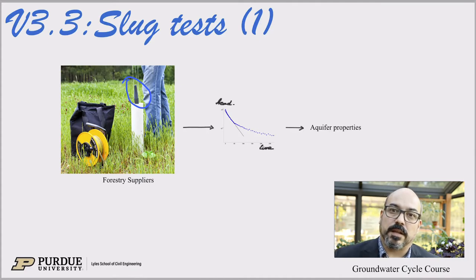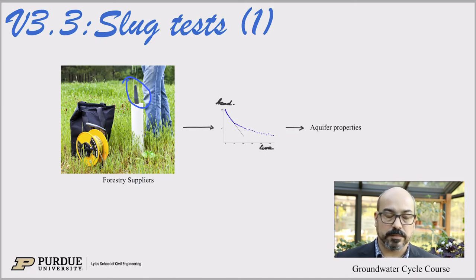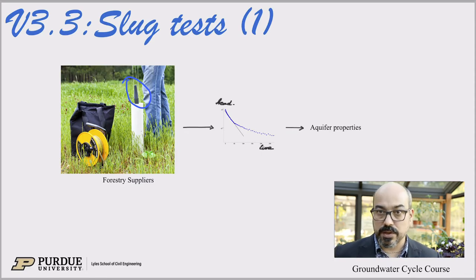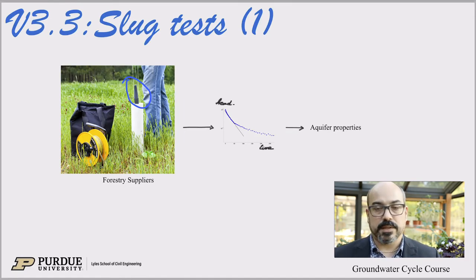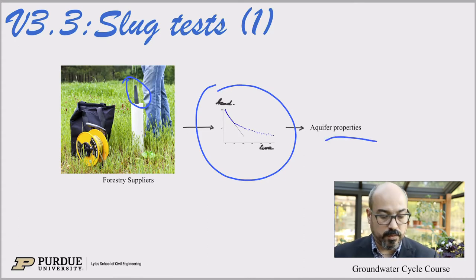When you drop that slug, that equivalent volume of water is displaced up, and then you observe the level of water going back down over time. You're in that transient realm we've been discussing in past lectures. You're looking at that water level dropping back down over time, and hopefully you're able to calculate some aquifer properties from that data. Here in the middle is an example showing head over time in a borehole, and then finally getting aquifer properties.